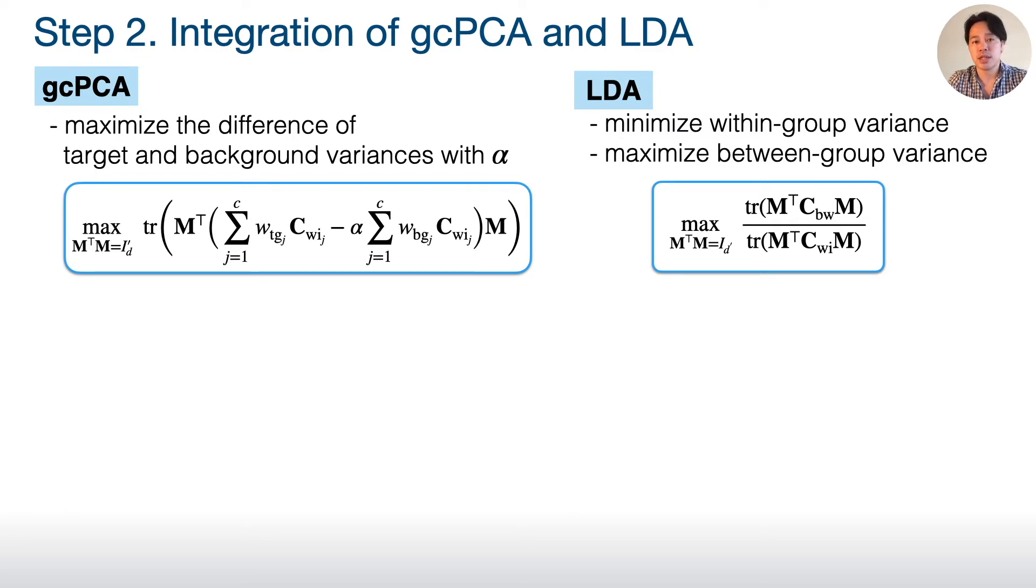In generalized CPCA, we maximize the difference of variances, which is the trace difference maximization. On the other hand, LDA minimizes within-group variance while maximizes between-group variance. This optimization is trace ratio maximization.